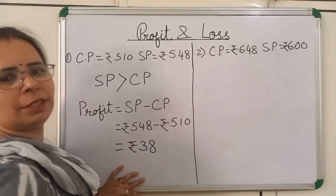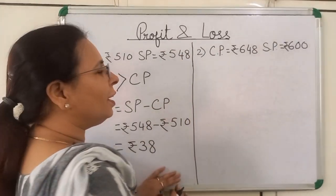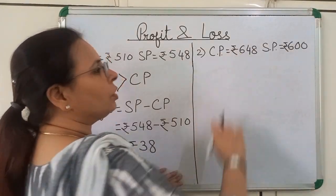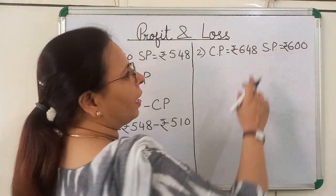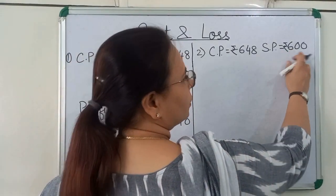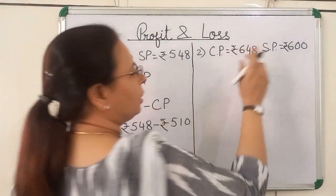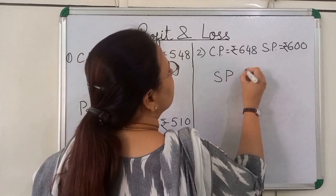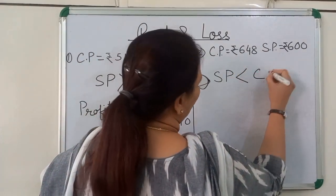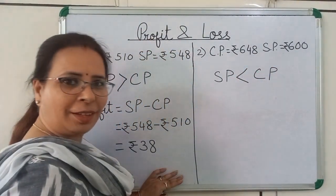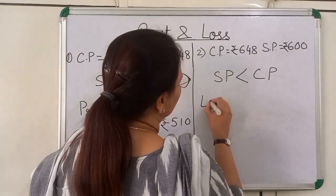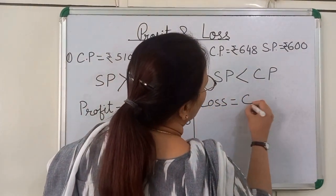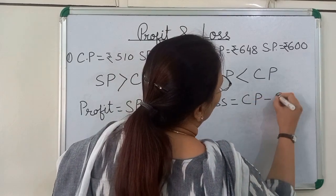Now we will see this question. You can see here cost price is Rs. 648 and selling price is Rs. 600. You can see SP is less than cost price, hence it made a loss. Loss is equal to CP minus SP.